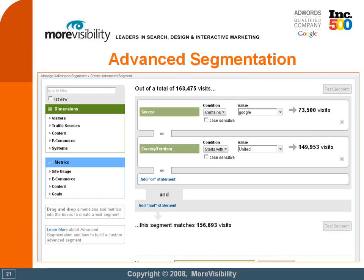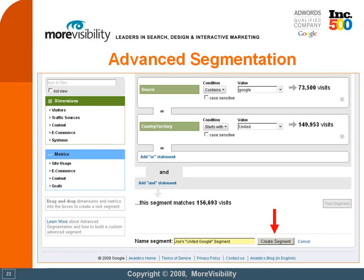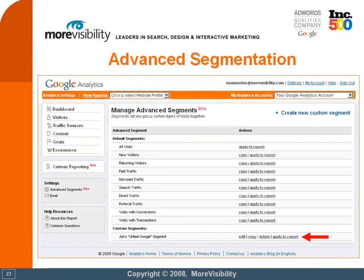I'm going to show an AND statement example in a few slides to explain the difference between OR and AND. Once you've tested your segment and are happy with it, scroll down to the bottom of the page, name the segment whatever you want — in this case I named it 'Joe's United Google Segment' — then simply click the 'create segment' button. It will live in your profile until you delete or edit it. You'll be taken back to the manage advanced segment screen where you'll see your new segment listed. To view it in Google Analytics, click 'apply to report.' Just like the custom reporting interface, you can come back at any time to edit, delete, or copy and modify it.